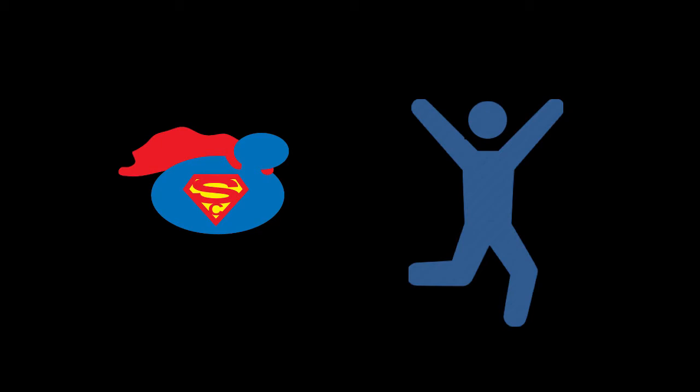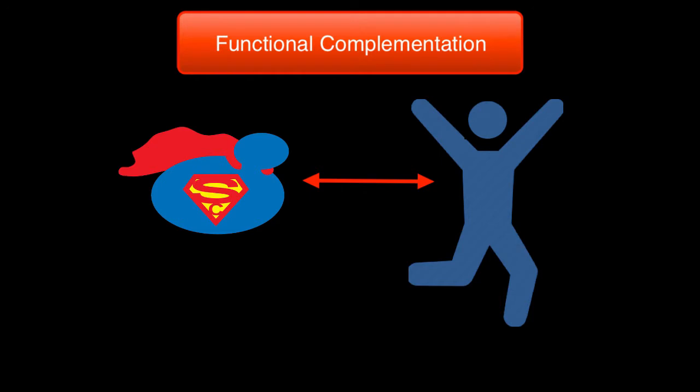Welcome to this quick video tutorial on yeast-human functional complementation data that can now be found in SGD. Yeast and humans diverged about a billion years ago, and there's still enough functional conservation between some pairs of yeast and human genes that they can be substituted for each other. Some yeast genes work in humans, and some human genes work in yeast. This is called functional complementation.